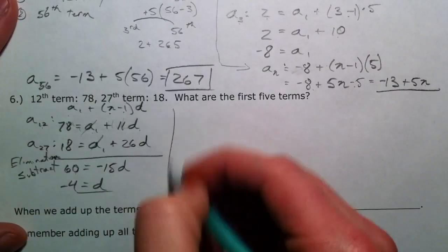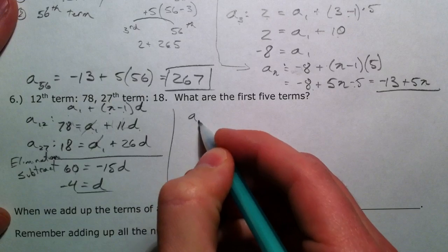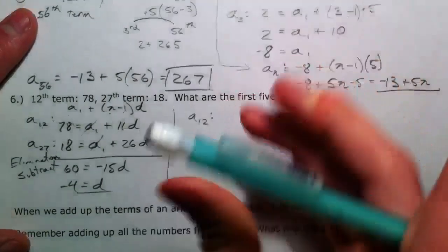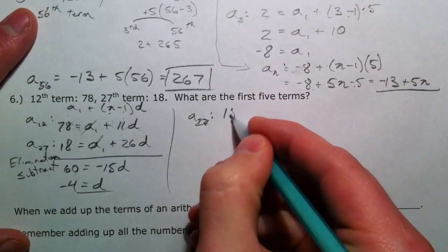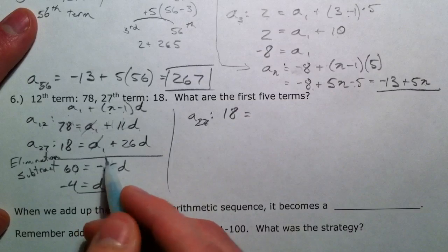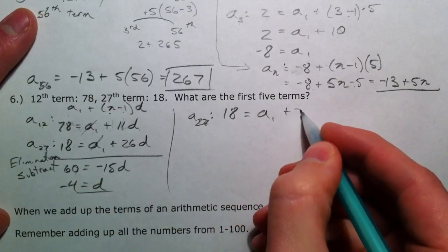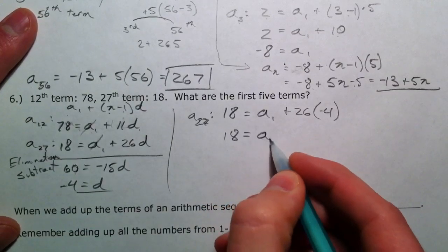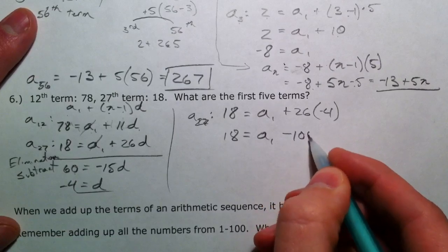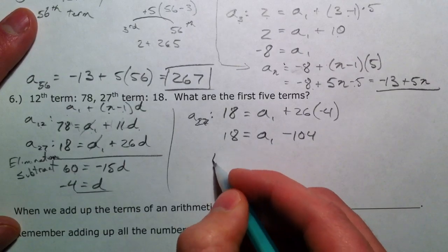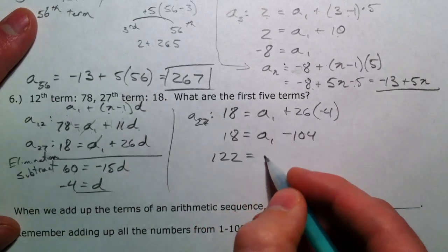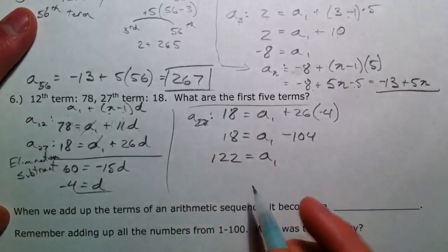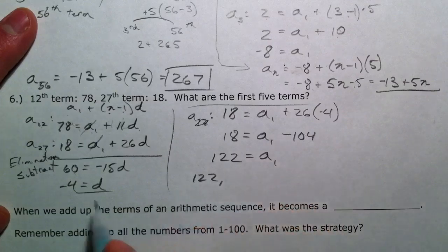So then you can plug it back in to find your first term. You can use either equation. Let's use a sub 27 because it's got smaller numbers. 18 equals a sub 1 plus 26 times d, which we now know is negative 4. So 18 equals a sub 1 plus negative 104. Then we add that to the other side and we get 122. So what are the first five terms? We've got 122, common difference of negative 4.